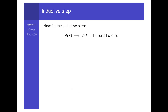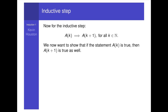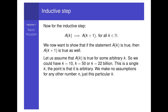Now for the inductive step: a_k implies a_{k+1} for all k in the natural numbers. We want to show that if a_k is true then a_{k+1} is true as well — domino k knocking over domino k+1. It does not correspond to knocking over all the dominoes. Let us assume a_k is true for some arbitrary k — it could be k equals 10, k equals 50, or k equals 22 billion. It is arbitrary; we make no assumptions for any other number n, just this particular k. That is, we assume the summation of i from 1 to k equals one-half of k times k plus 1.